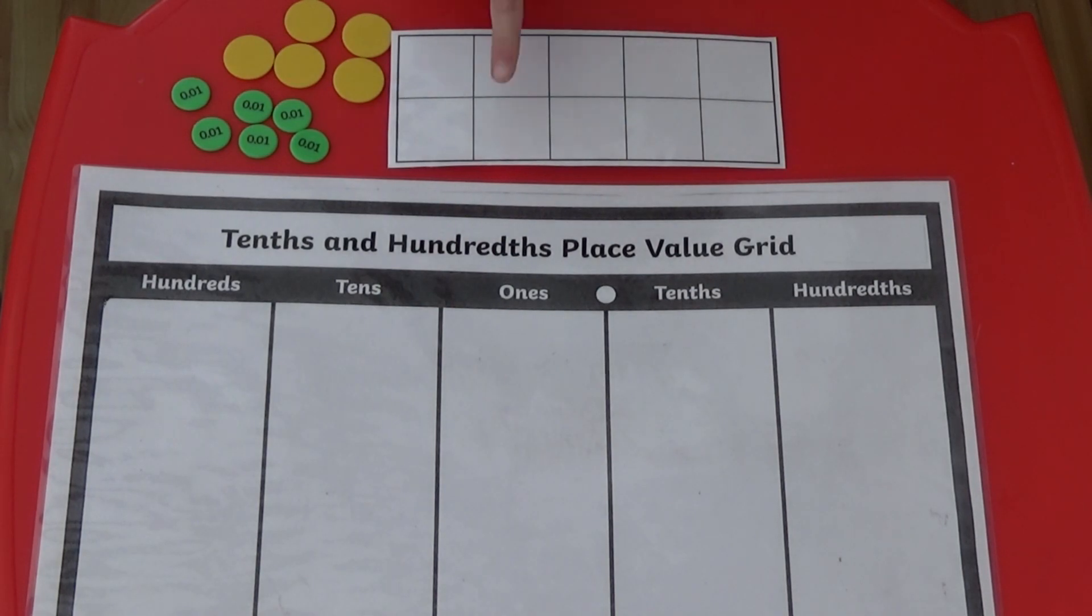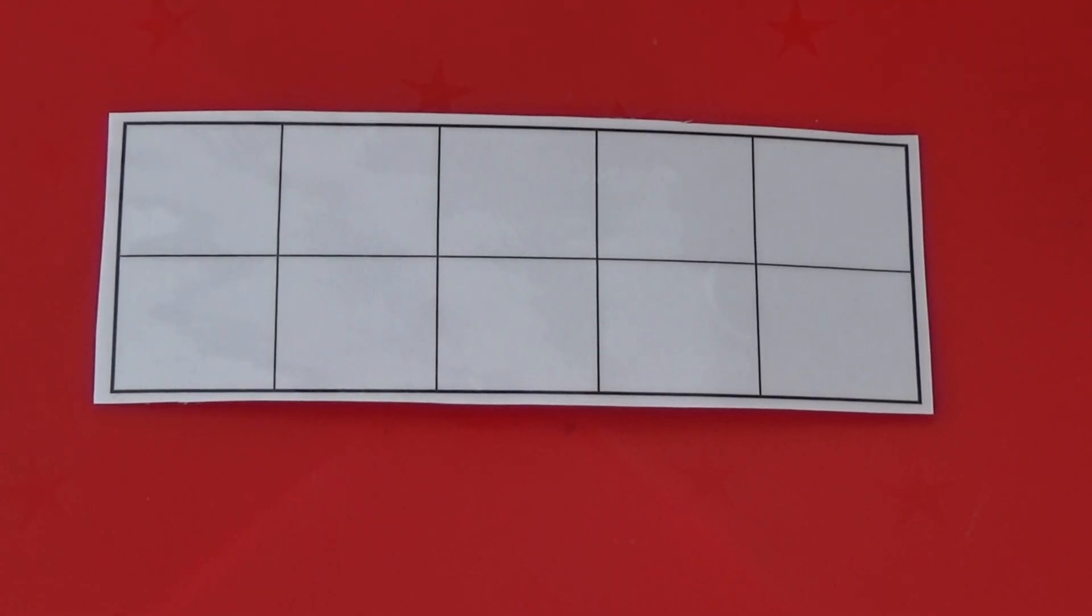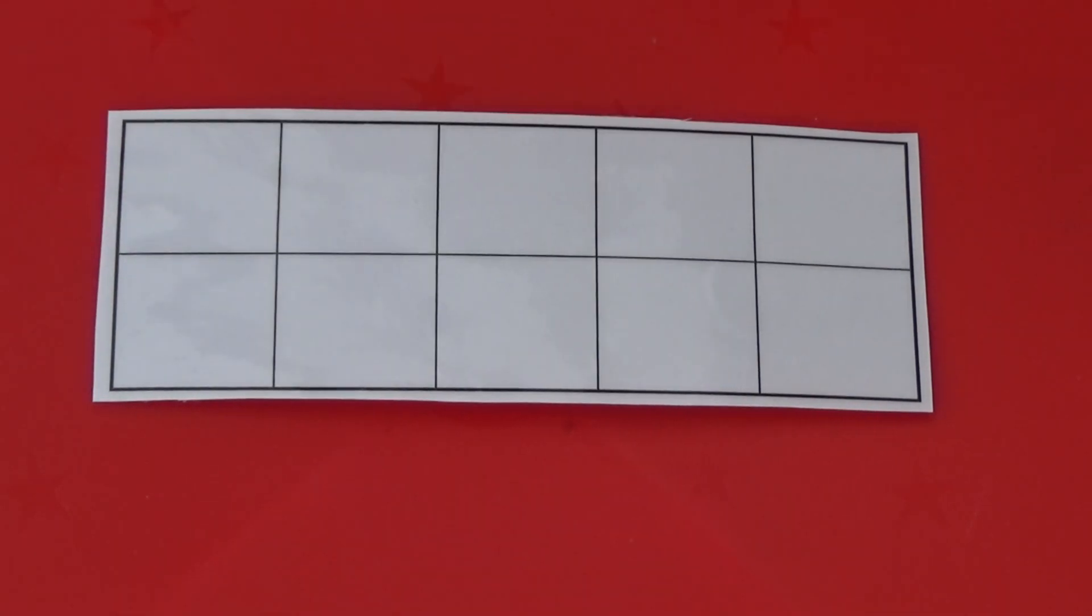We're going to use tens frames, a place value grid and counters to help. You may have used tens frames before for whole numbers. With whole numbers a tens frame is worth 10, and each box on the tens frame is worth 1.